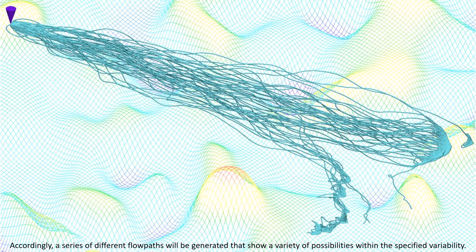Accordingly, a series of different flow paths will be generated that show a variety of possibilities within the specified variability.